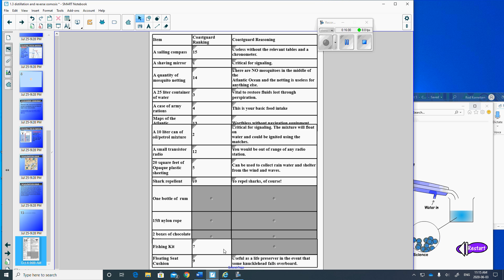A fishing kit. Pretty middle of the road. No guarantee you'd catch any fish. The chocolate is actually more useful. A lot of calories right there. Could save your life. Nylon rope.